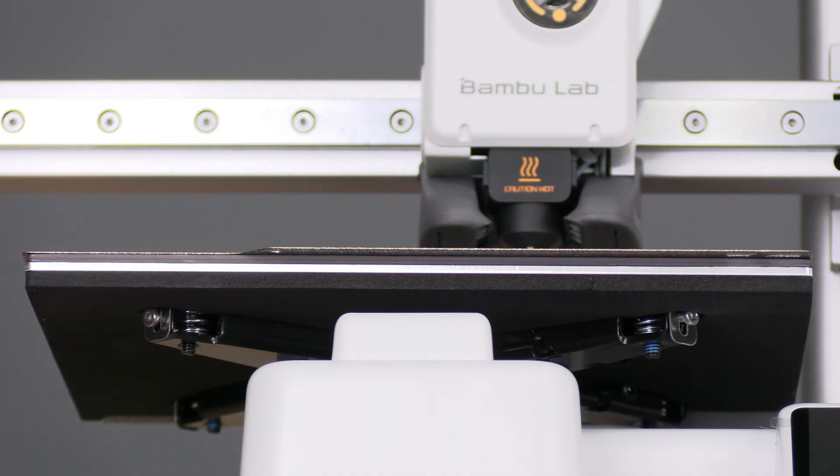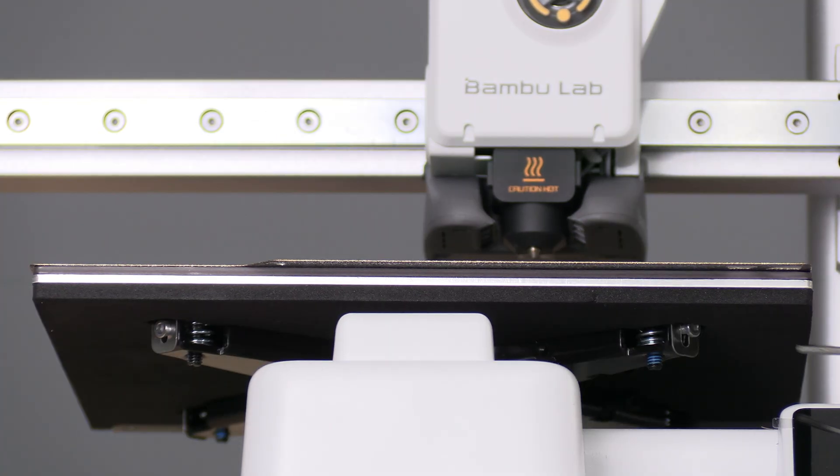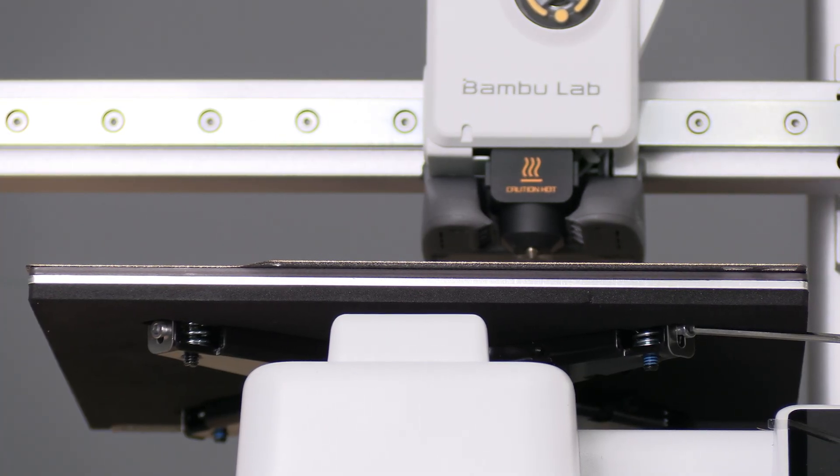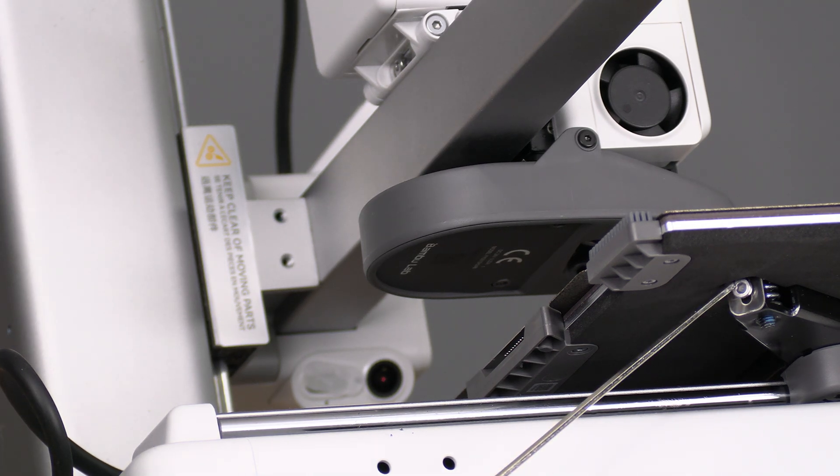Under the heat bed, there are three screws to tighten. The first one is right here. The second one is right here. And the third one is in the back, underneath the rubber scrubber, right here.